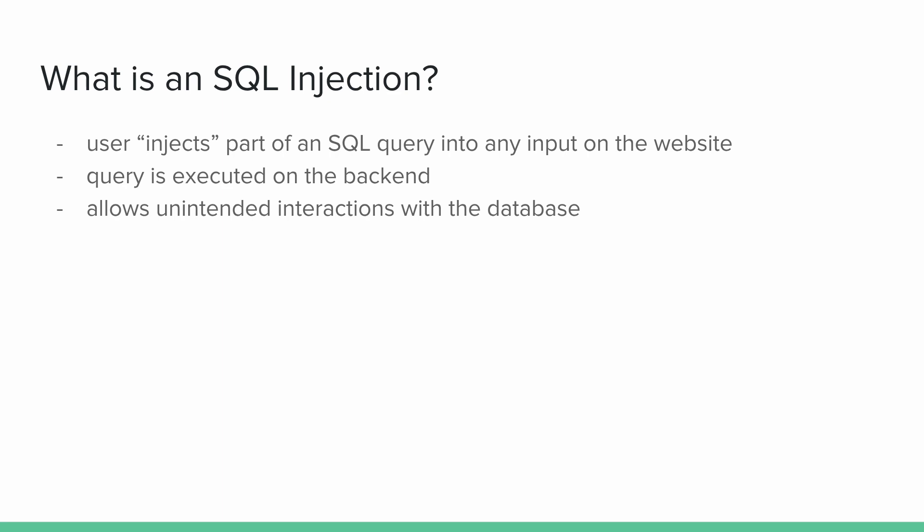So what is an SQL injection? The user injects, as the name already says, part of an SQL query into any input on the website — either the URL or any input in a form. Anywhere where the user can type anything is where SQL injection could theoretically happen. The query is then executed on the backend, allowing for unintended interactions with the database, whether that is inserting something or even dropping the entire table.